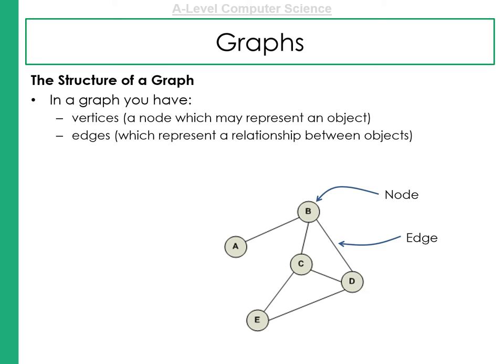The keywords you need to know for graphs are vertices and edges. We've come across the word node before, and you should be familiar with this. The items within the graph are what we call nodes. But sometimes these can also be called vertices. An edge shows a relationship between an object.